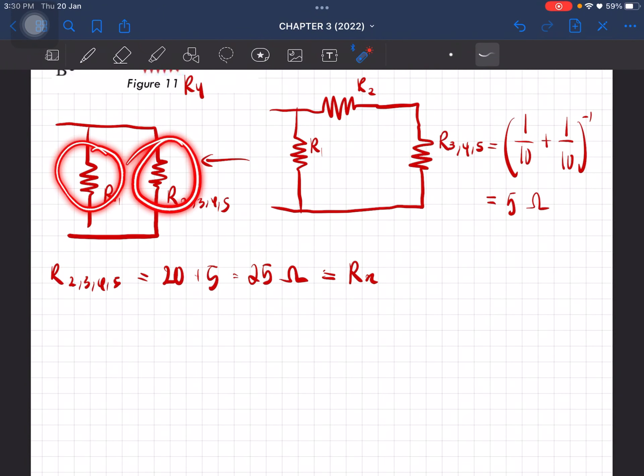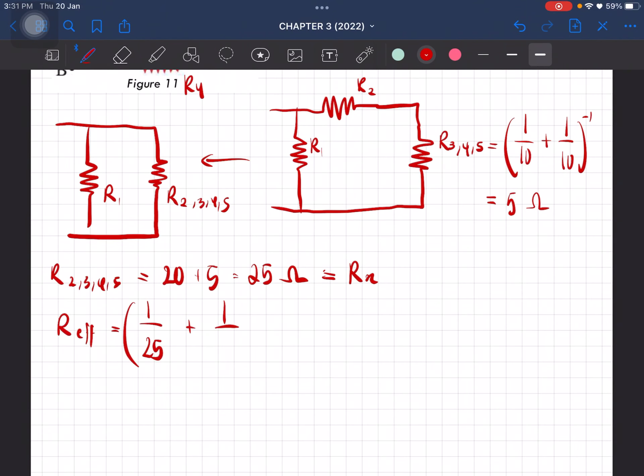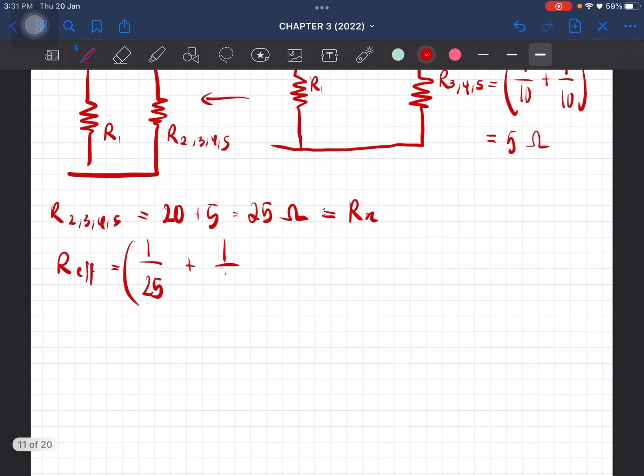So now this one and this one here is connected in parallel. In parallel, so we will then get 1 over 25 plus 1 over R1, which is equal to 10, to the negative 1. So you should then get the value of 7.14 ohm effective resistance.